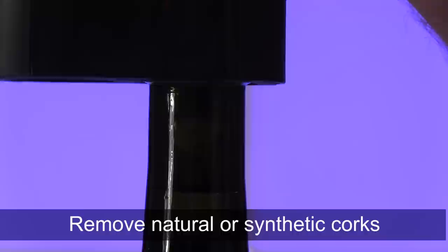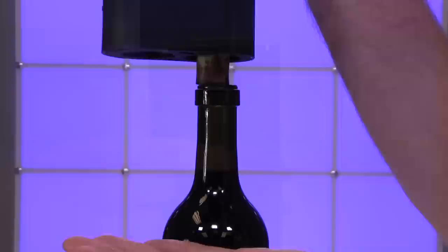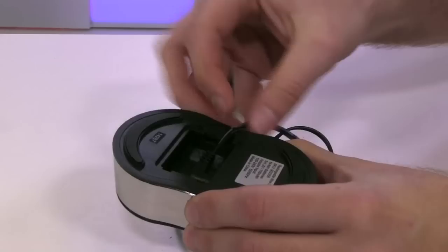Then use the other side to remove either synthetic or natural corks. Press the button down to insert the corkscrew and remove it from the wine bottle, and then to release it from the wine opener, simply press the up arrow.